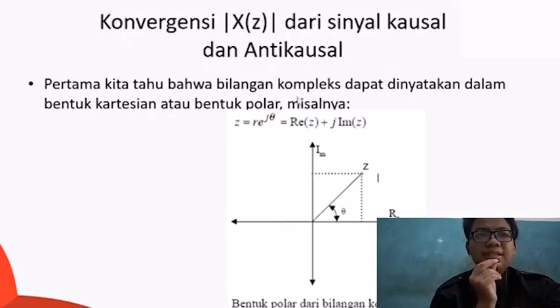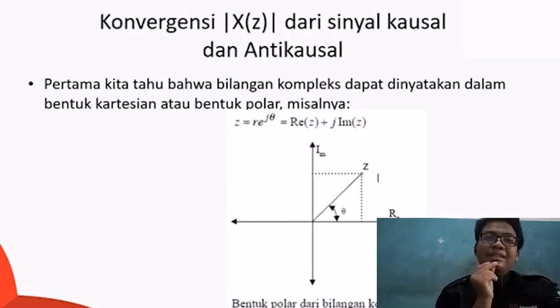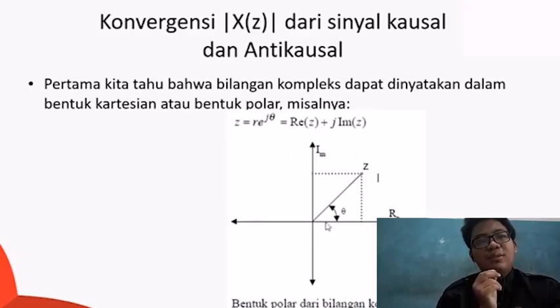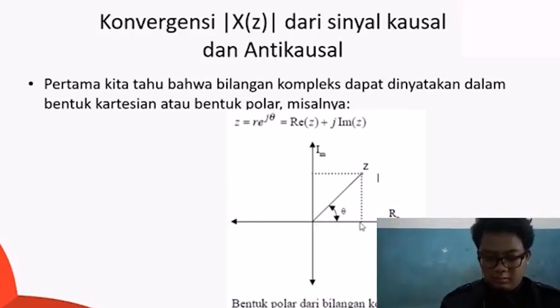Penjelasan berikutnya yaitu konvergensi X(Z) dari sinyal kausal dan antikausal. Pertama kita tahu bahwa bilangan kompleks dapat dinyatakan dalam bentuk Kartesian atau bentuk polar, misalnya seperti gambar berikut. Sekian dari penjelasan saya, mohon maaf bila ada salah informasi dan salah kata karena keterbatasan tentang transformasi Z. Terima kasih atas perhatiannya. Assalamualaikum warahmatullahi wabarakatuh.